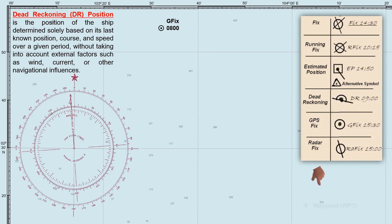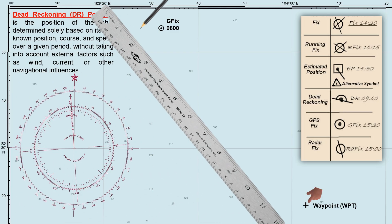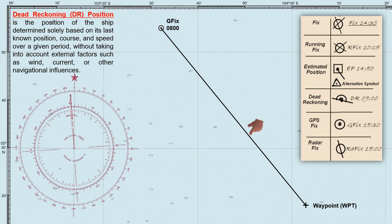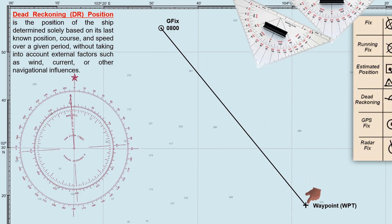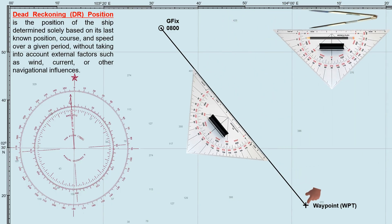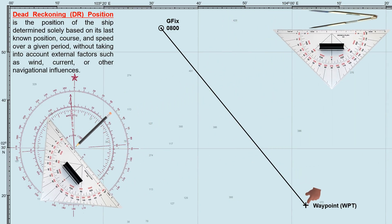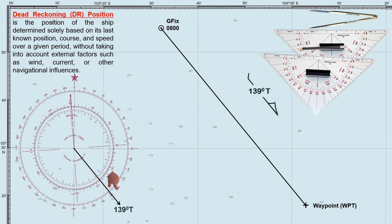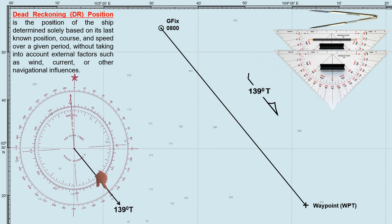If the next waypoint is located here, draw a line from the last known position to the waypoint. This line represents our planned track towards this waypoint. Now, using a navigational triangle and compass rose, determine the course to steer. In this case, the course towards the next waypoint is 139 degrees true.